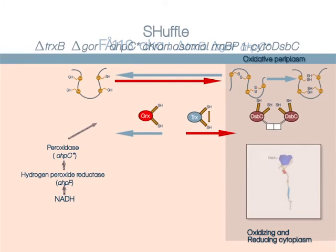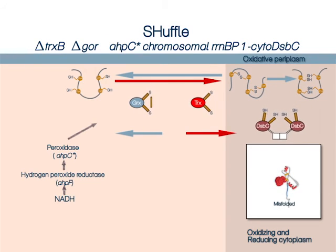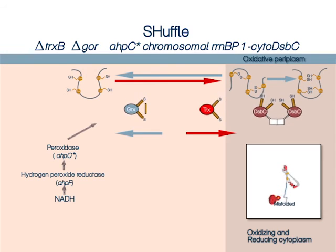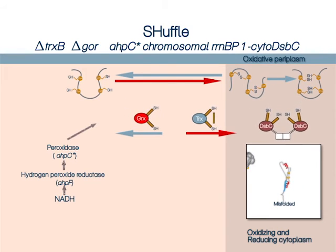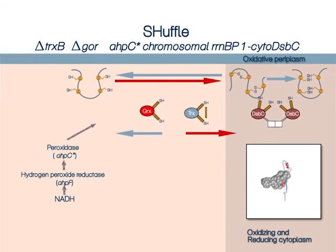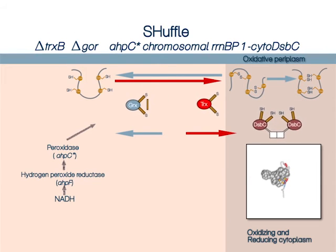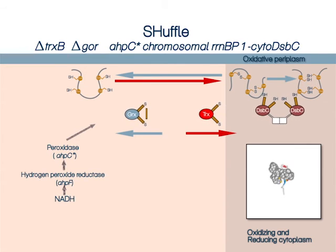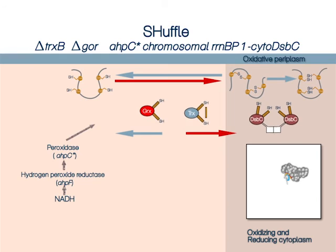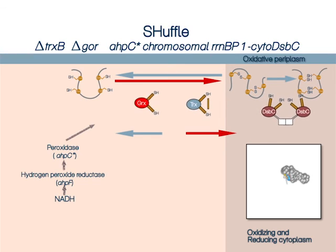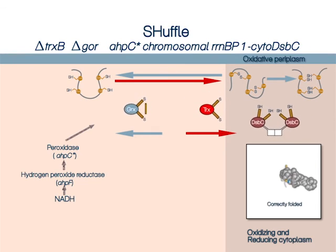However, unlike the periplasm, the cytoplasm lacks any disulfide bond isomerase essential for the folding of complex, multi-disulfide-bonded proteins. To increase the fidelity of disulfide bond formation, the periplasmic disulfide bond isomerase DsbC has been engineered to be overexpressed in the cytoplasm, allowing for the correct folding of multi-disulfide-bonded proteins.